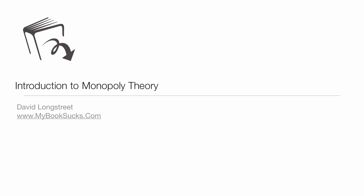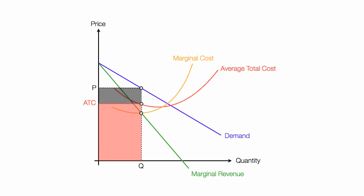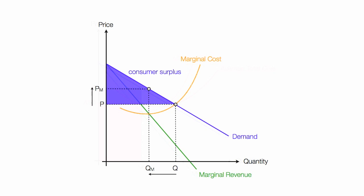In this tutorial, I'm going to introduce the idea of monopoly theory. I'm going to show you how all these curves are derived. I'm also going to show you how to calculate the profit, revenue, and cost for a monopoly. And finally, I'm going to show you what happens to consumer surplus and price and quantity when you compare a monopoly with perfect competition.